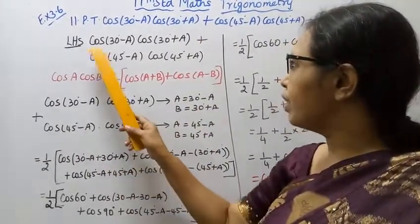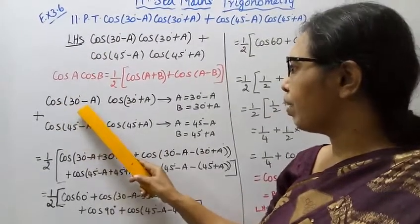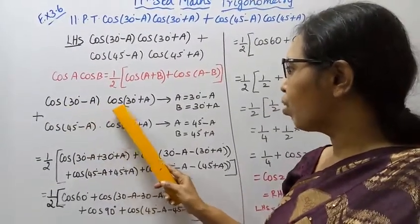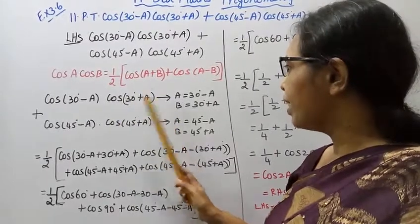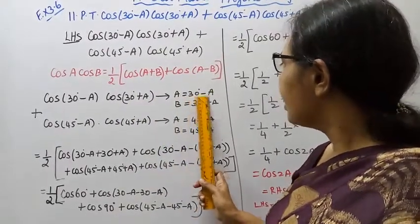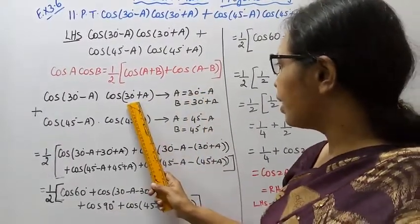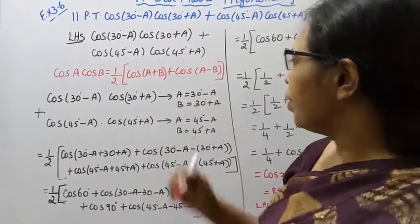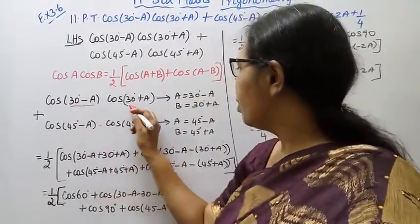Cos 30 degree minus A into cos 30 degree plus A. Here, A is 30 degree minus A, B is 30 degree plus A. This is A, this is B.